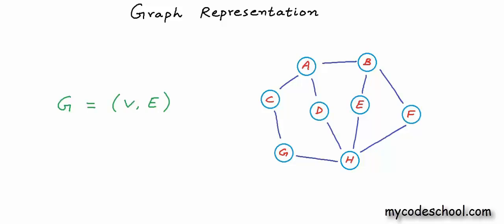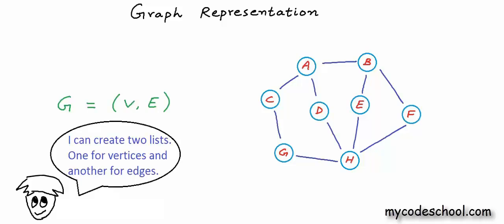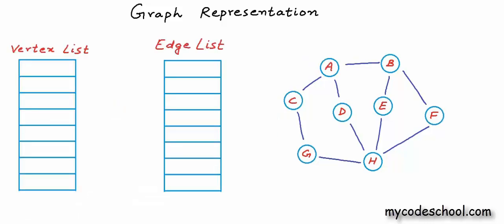Now to create and store a graph in computer's memory, the simplest thing we can do is create two lists — one to store all the vertices and another to store all the edges. For a list, we can use an array of appropriate size, or we can use an implementation of a dynamic list, like vector in C++ or ArrayList in Java.